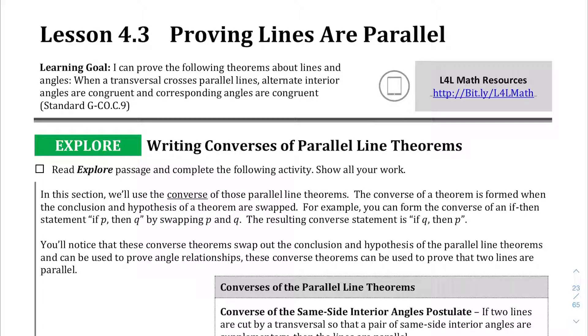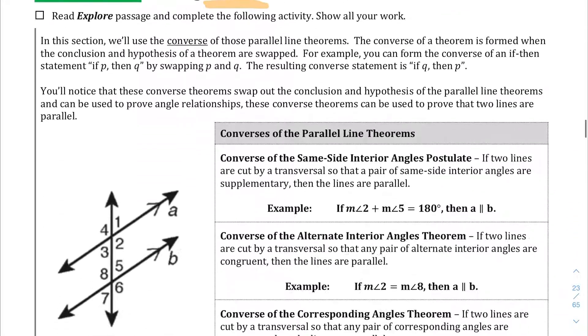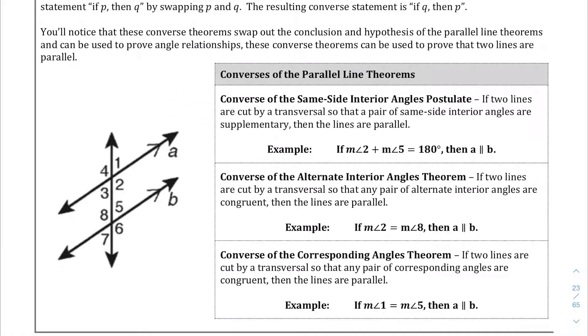We're going to be doing what's called writing the converses of those parallel line theorems and you already know all these basically. These are called the same side interior angles, postulate the alternate interior angles theorem, the corresponding angles theorem. But now we're going to do the converse of those. We're going to go literally the other direction to prove or use these theorems to prove that the two lines are parallel.